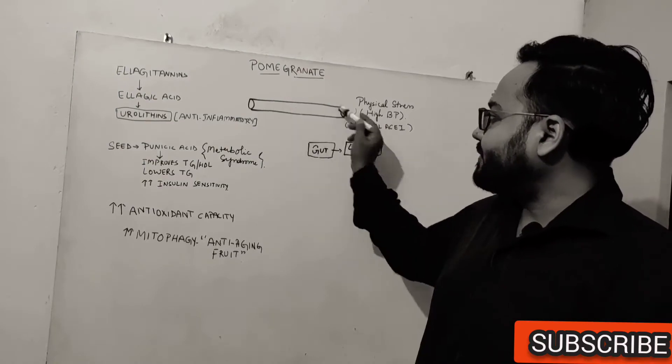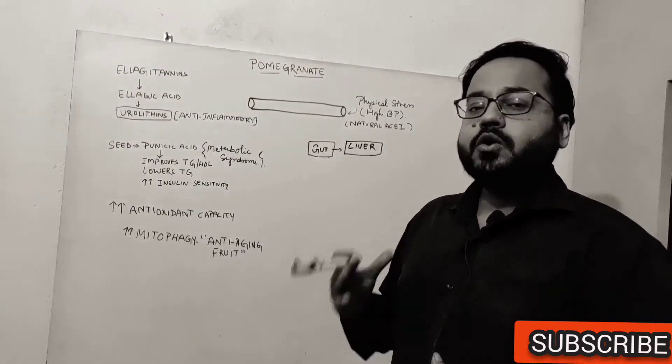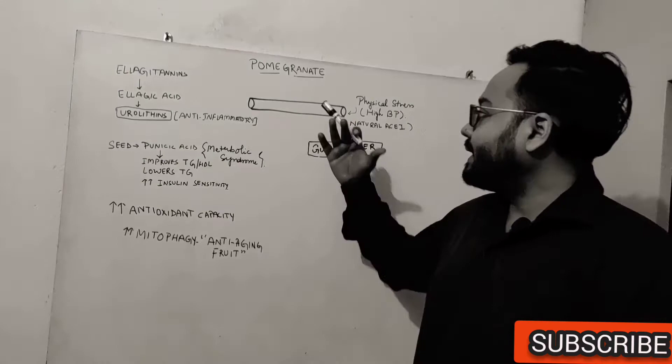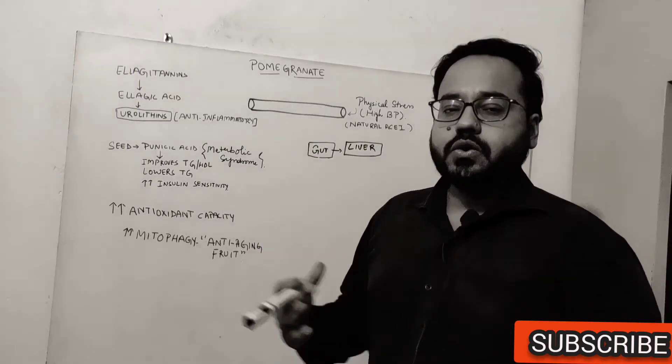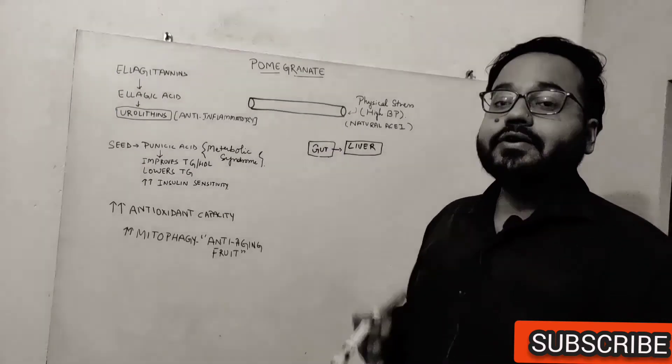Whichever blood pipe will be affected, that organ is going to suffer. For example, if coronary artery is affected, it can lead to heart attack. If carotid artery is affected, it can lead to stroke. If renal artery is affected, it can lead to kidney failure.